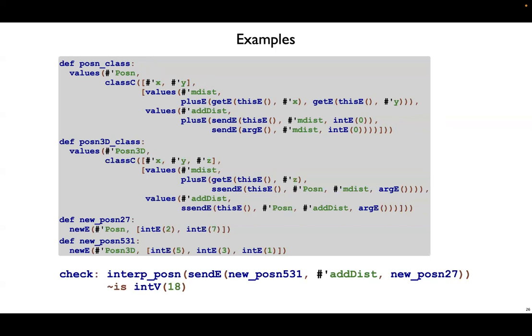Here we've added a posn3d to the bottom of the program. That's new posn five three one. And when we interpret method call to the new posn five three one, calling the add_dist method and sending as argument new posn two seven, we should get back the sum of all those numbers.